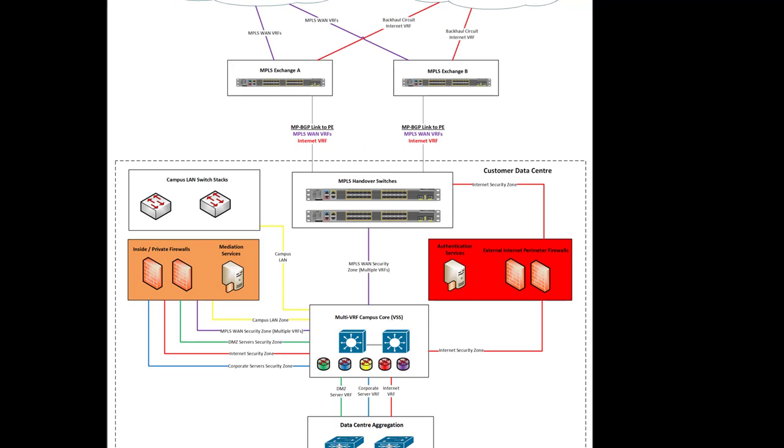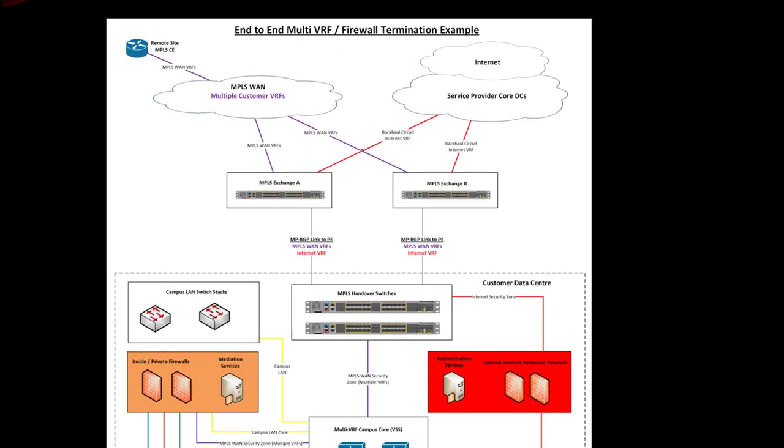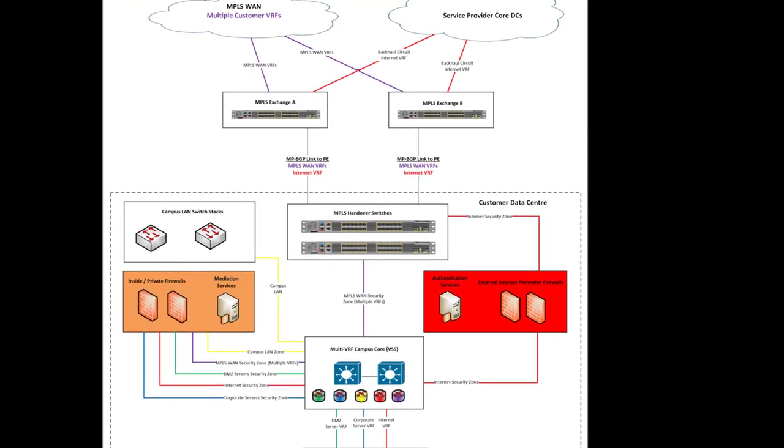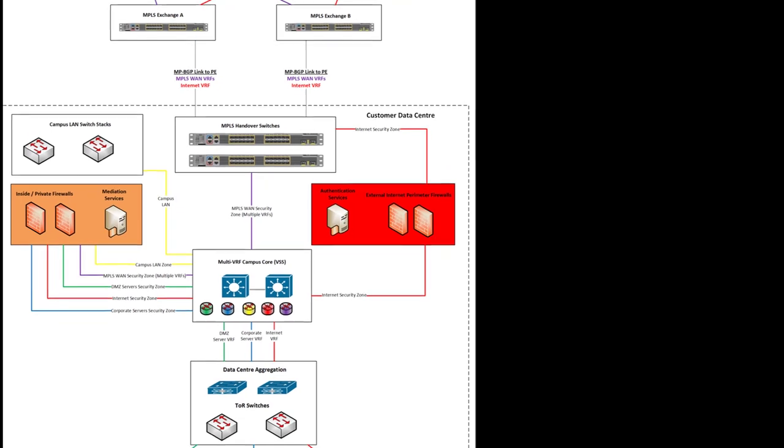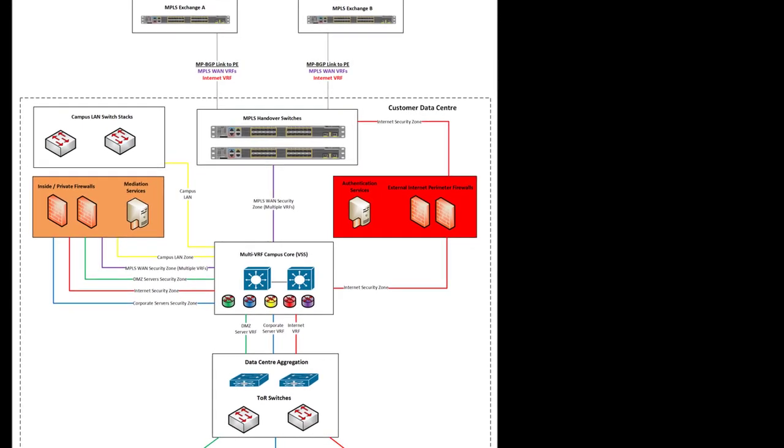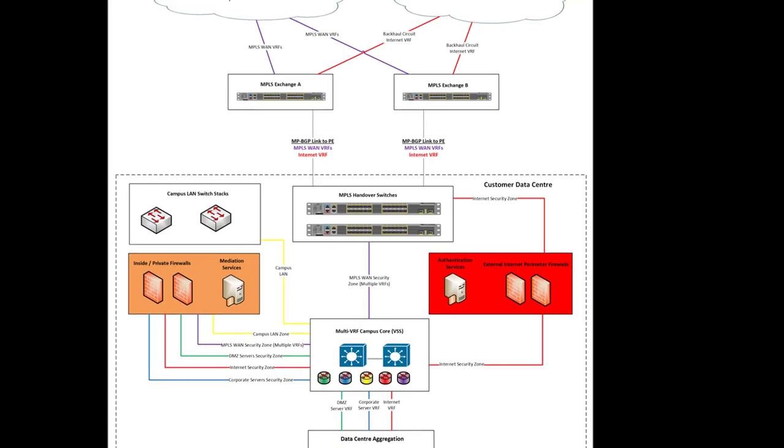Here we have a representation of how that might look in an end-to-end network. Starting at the top, we have things coming from the internet and from the MPLS network. The MPLS multiple VRFs in the middle on the purple line are plumbed directly into the core switch, whereas internet-based services come via a second layer of firewalls.